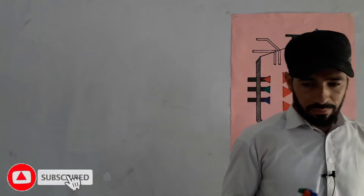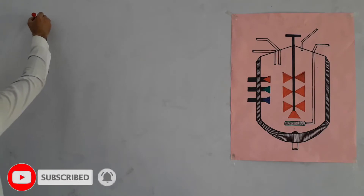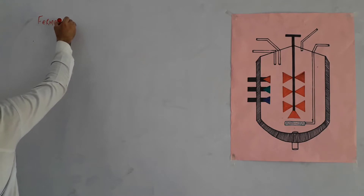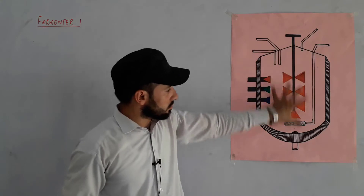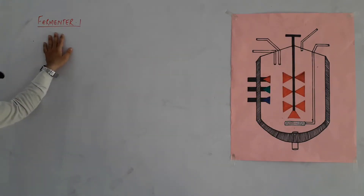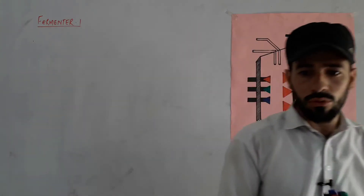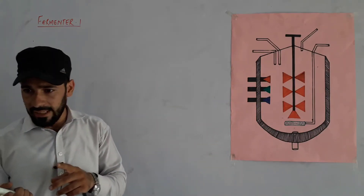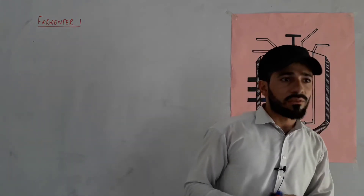Today's topic is the fermenter. What is a fermenter? Let's go into detail. What is a fermenter? When we talk about fermentation, it is the process by which glucose is converted anaerobically into lactic acid or alcohol.